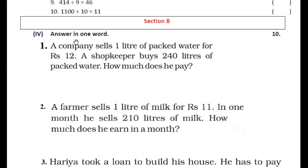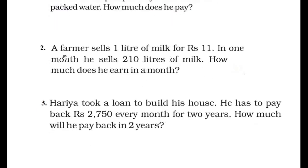अब Section B है. इसमें आपको सिर्फ answer लिखना है — answer in one word. आपको यहाँ पर सिर्फ answer लिखना है. Q1: A company sells one liter of packet water for rupees 12. Shopkeeper 240 liter packet water खरीदता है तो कितना pay करता है? Rough में solve करिए, दोनों का multiply करिए और जो answer आता है वो यहाँ लिखिए.